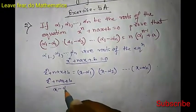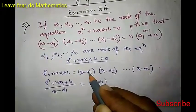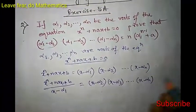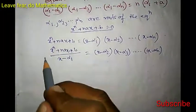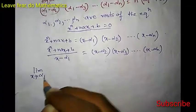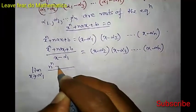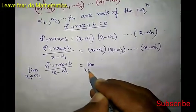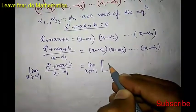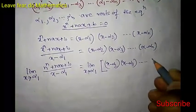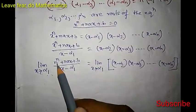Now divide both sides by (x − α₁): [xⁿ + nax + b] / (x − α₁) = (x − α₂)(x − α₃)···(x − αₙ). Now take the limit as x → α₁ on both sides: lim(x→α₁) [xⁿ + nax + b] / (x − α₁) = lim(x→α₁) (x − α₂)(x − α₃)···(x − αₙ).